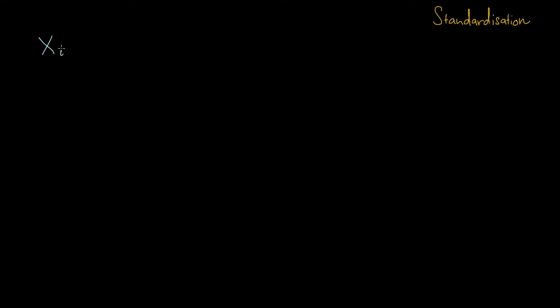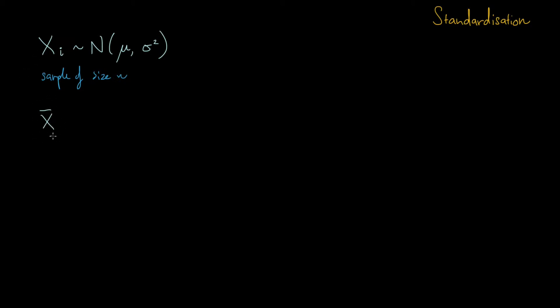Suppose we have some data and we know that our data takes on a certain distribution. We represent the distribution that a single data point takes on as a random variable, subscripted by i to indicate which data point it is. For example, this could take a normal distribution with a mean mu and a standard deviation sigma squared.